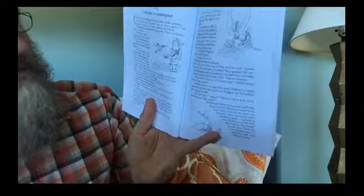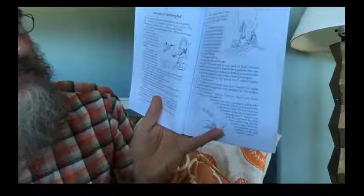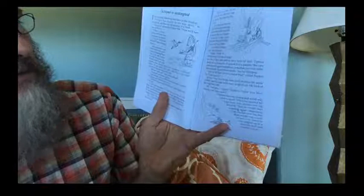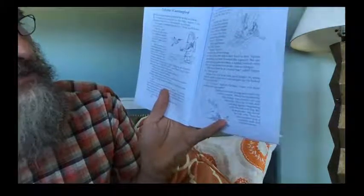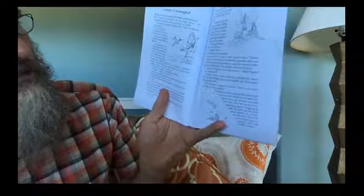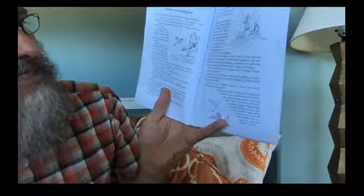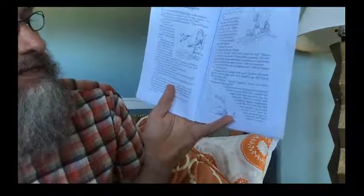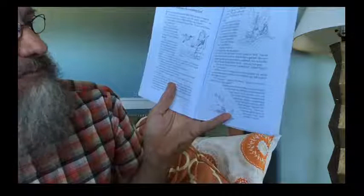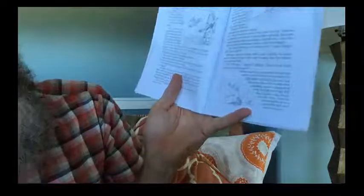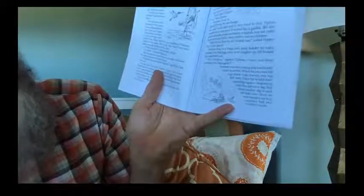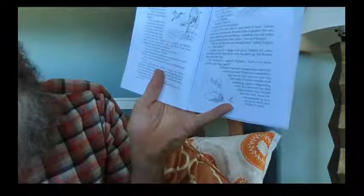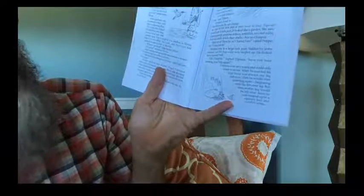Octopus lived in the rock pools. He can change the color of his skin and is very hard to find. Tiptoes peered into a rock pool. It looked like a garden. She saw purple mussels, green sea lettuce, a starfish, two red crabs, three sea snails inside their shells. But no Octopus. Here he is. Here he is. I found him, called Pepperpot. Come, quick. Octopus was in a large rock pool, hidden by some seaweed. And his legs were very tangled up. He looked like a squirmy ball. Oh, Octopus, sighed Tiptoes. Have you been counting your legs again?